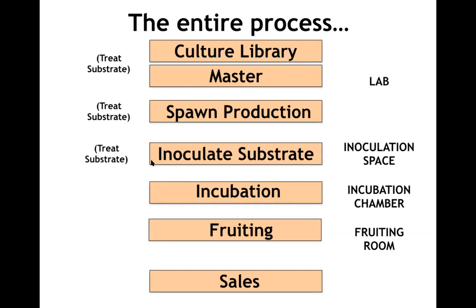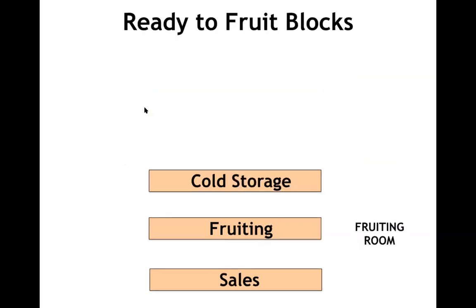If we were to do the whole process there are three points where you're treating substrate — three points where contamination can be introduced. The effect of contamination is more significant higher up in the process. Taking all these risks in-house is a major consideration especially for a new grower who hasn't yet developed refined techniques. Our last method is ready-to-fruit blocks — we've eliminated inoculation and substrate treatment entirely, just buying in the material. The biggest change is needing sufficient cold storage, since it's most cost-effective to buy blocks in bulk.